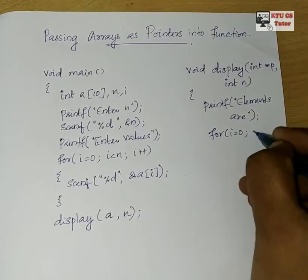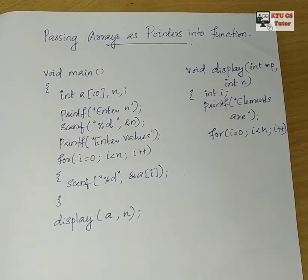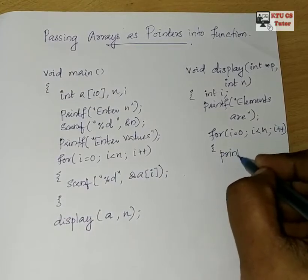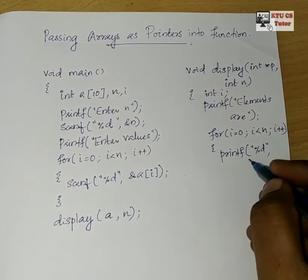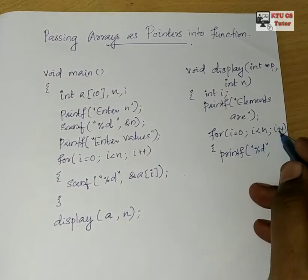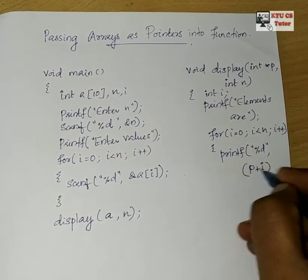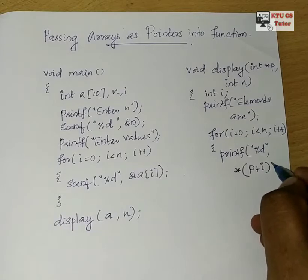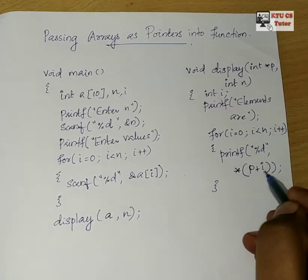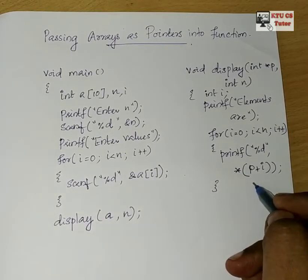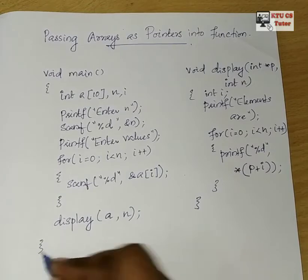So for i equal to 0, i less than n, i plus plus — inside the loop, we give a printf statement with percentage d. Here we will print using a pointer: p plus i gives the address, and inside that address we use the dereferencing operator, so star(p plus i). This prints each array element through the pointer in the for loop.